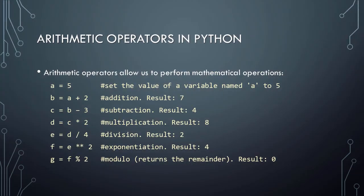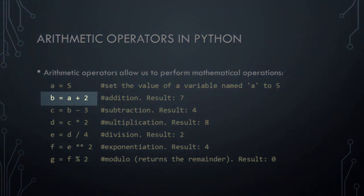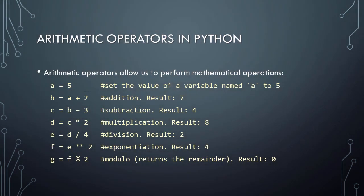Next, let's take a look at arithmetic operators in Python. Arithmetic operators allow us to perform mathematical operations on variables. To perform addition, we use the plus symbol. In this example, we begin with a variable named a, whose value is set to 5. We then declare a variable named b and set its value to a plus 2, which yields 7.